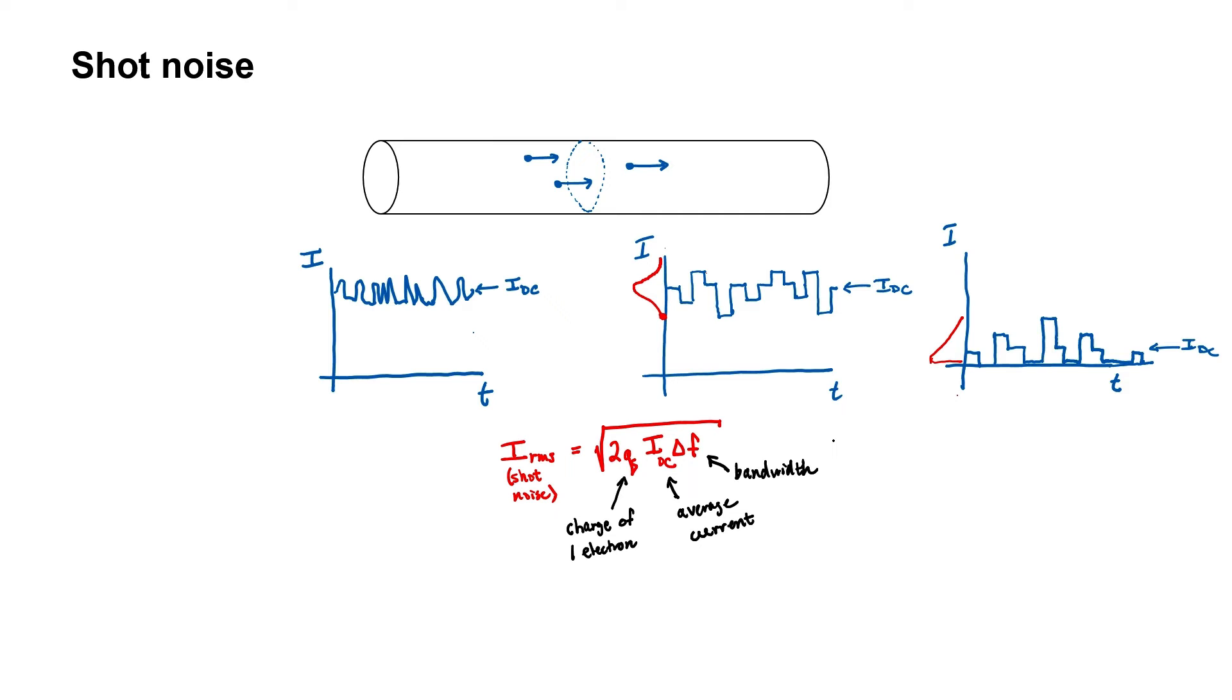There's no resistance in this equation like there was with thermal noise. Shot noise is quantum mechanical in nature. If I wanted to know what voltage in a circuit would be caused by the shot noise, I could just use Ohm's law, V equals IR, where I here is the RMS current. I could then calculate an RMS voltage.